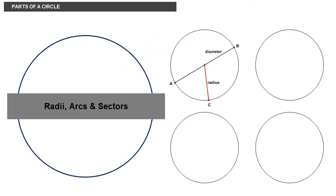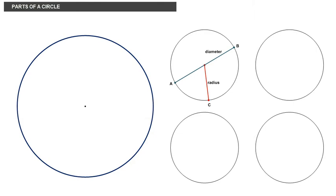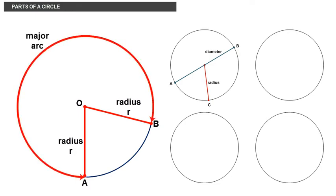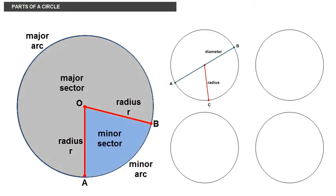Radii, arcs and sectors. Two radii OA and OB are drawn. The points A and B split the circumference into two arcs, the longer one called the major arc and the smaller one called the minor arc. And that splits the circle into two parts called sectors. The sector is a slice of a circle obtained by two radii cutting it and enclosed by those radii and an arc.